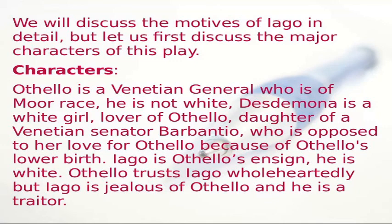Othello is a Venetian general of Moorish race — he is not white. Desdemona is a white girl, the lover of Othello and daughter of Venetian senator Barbanteo, who is opposed to her love for Othello because of Othello's lower birth. Iago is Othello's ensign; he is white. Othello trusts Iago wholeheartedly, but Iago is jealous of Othello and is a traitor.